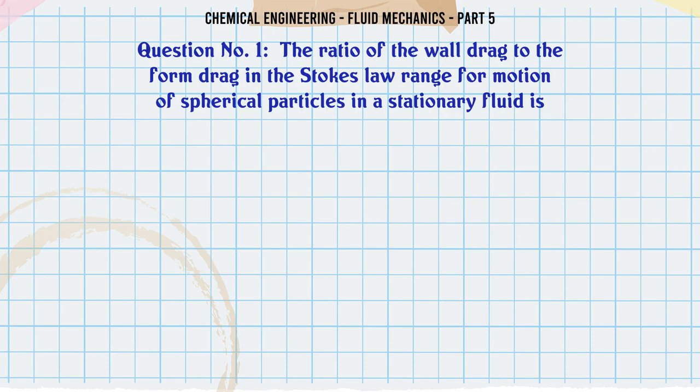The ratio of the wall drag to the form drag in the Stokes-Law range for motion of spherical particles in a stationary fluid is: a) 0.5, b) 1, c) 2, d) 0.33. The correct answer is 2.